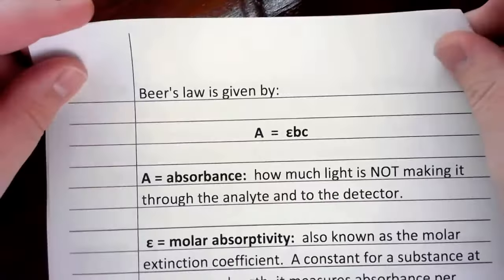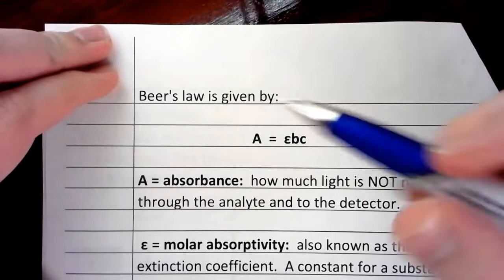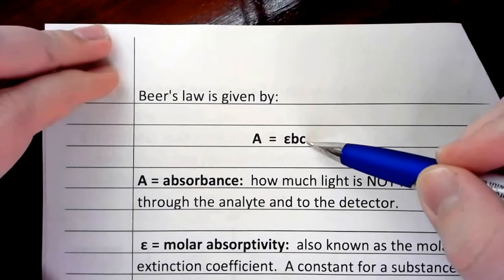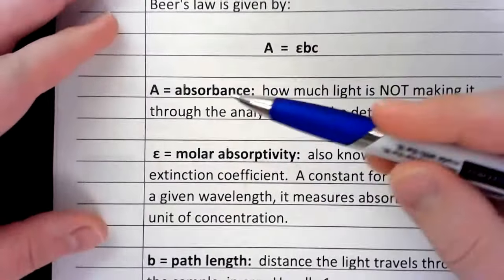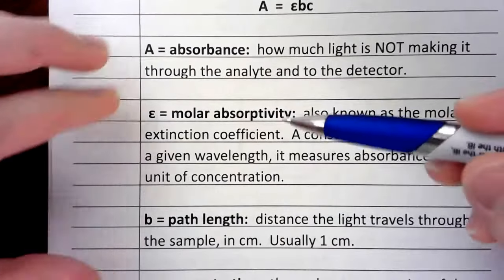So this is called Beer's Law. Beer's Law gives you the relationship mathematically between absorbance and concentration. Now there's some stuff that also matters here. So absorbance, we've already talked about in the introduction.